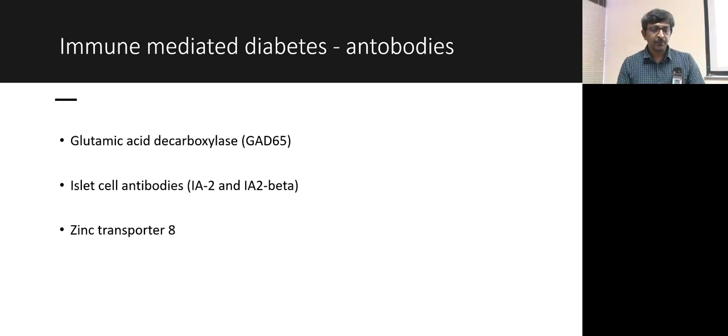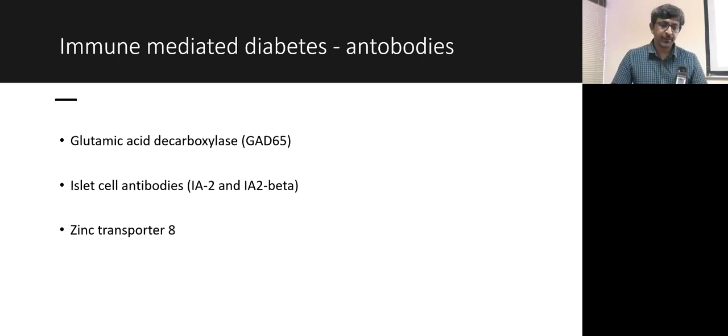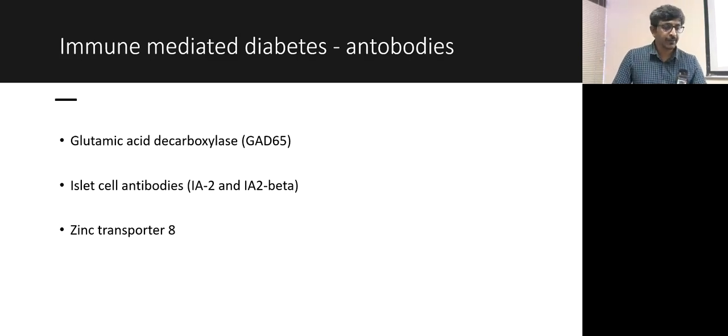For immune-mediated diabetes, the antibodies normally checked are GAD antibodies, islet cell antibodies, and zinc transporter 8 antibodies.